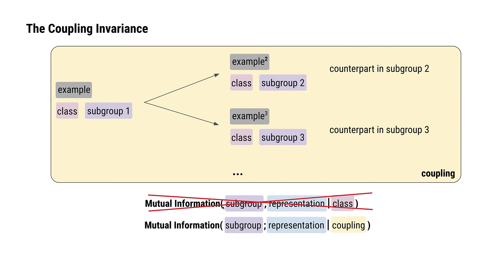Instead of just conditioning on the class, we additionally condition on the coupling that an example belongs to in this mutual information term. This gives us a stronger invariance guarantee.